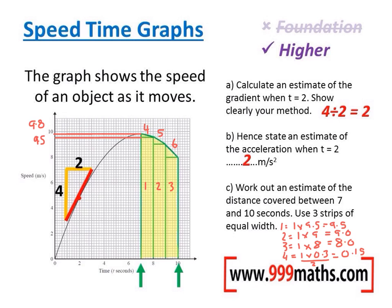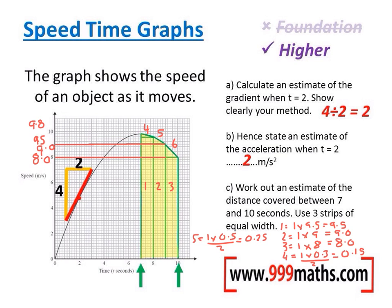Block 5 has a base of 1, going from 8 to 9, and the height goes from 9.0 to 9.5, so its height is 0.5. Base times height divided by 2 gives 0.25. Finally, area 6 has a base of 1 and its height goes from 8 up to 9, so height is also 1. Base times height divided by 2 gives 0.5.